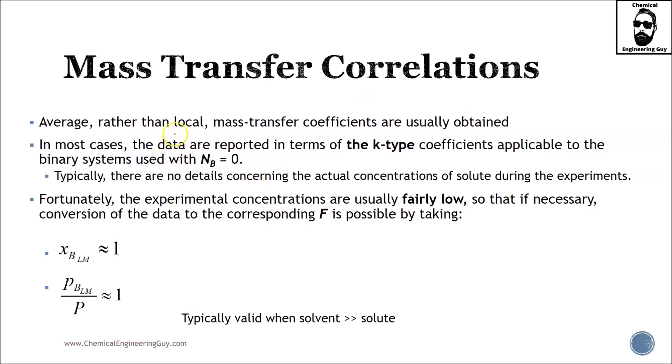Average rather than local mass transfer coefficients are usually obtained, which is great. In most cases the data are reported in terms of K type, so a lot of K values will be found, applicable to the binary system, so not only K values, but also UMD, which requires a stagnant layer.